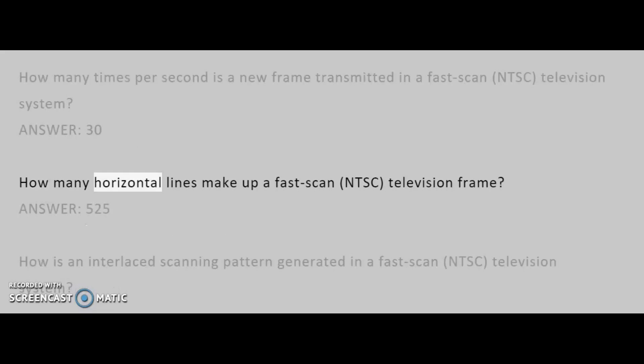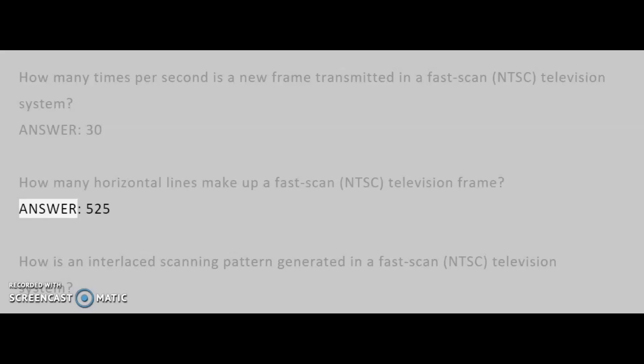How many horizontal lines make up a fast-scan NTSC television frame? Answer: 525.